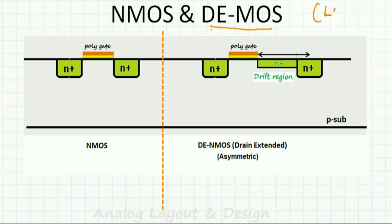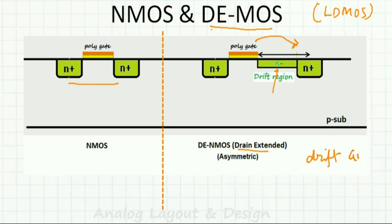Let's understand a transistor called DMOS, also called drain-extended MOS. Comparing with a traditional planar NMOS, the N-channel transistor has its drain extended — the drain is away from the poly gate and not overlapping or very near to it. In between, we have something known as the drift region, where current flows due to drift — current driven by the potential difference VDS between drain and source.